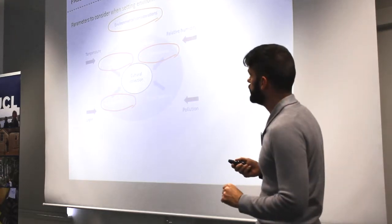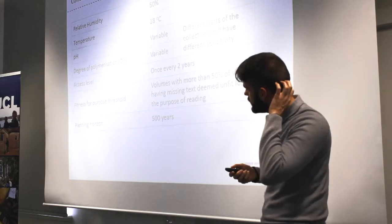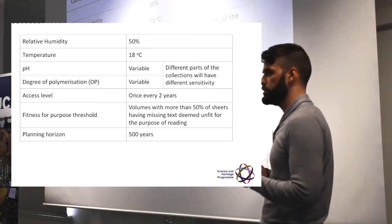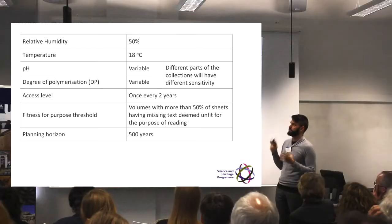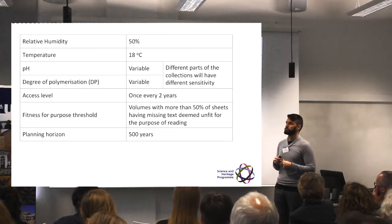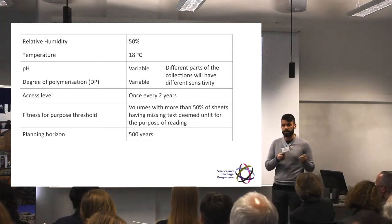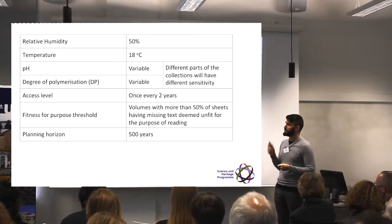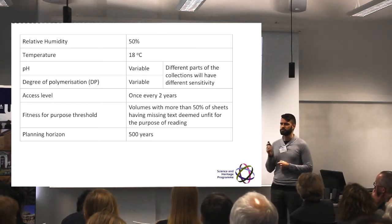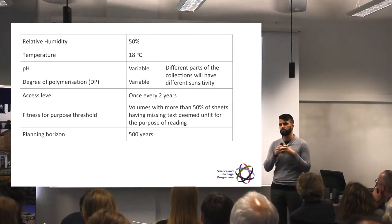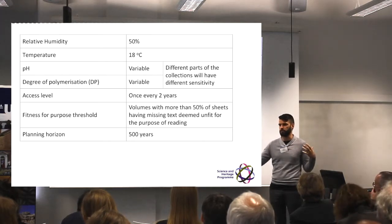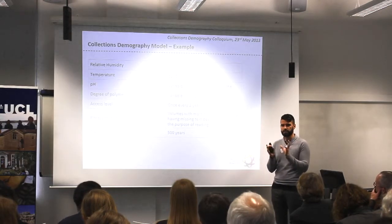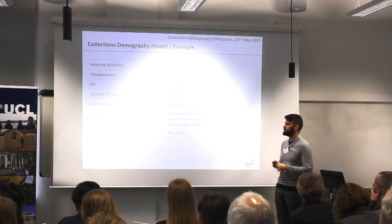Before I show you the graph that Matija showed earlier: this is an example, and these are the variables we have input for that particular graph. The relative humidity is set at 50%, temperature at 18 degrees Celsius, the pH and the degree of depolymerization vary, and these have been measured by Carlotta using NIR. The access level is set at once every two years — a relatively low level of access — because we have spread the total amount of productions at the National Archives over the entirety of our collection. However, as I said, you could examine it for smaller parts of the collection with a higher access level.